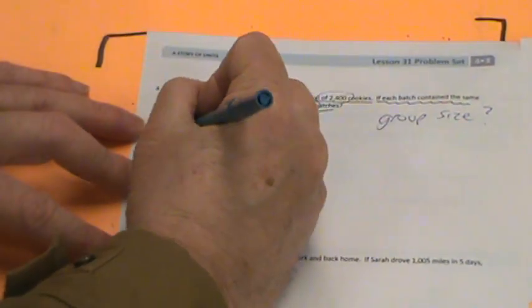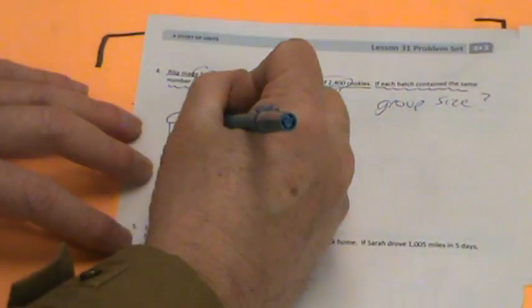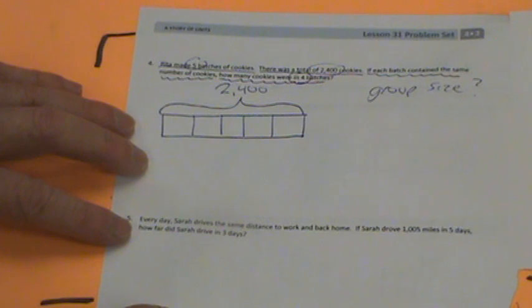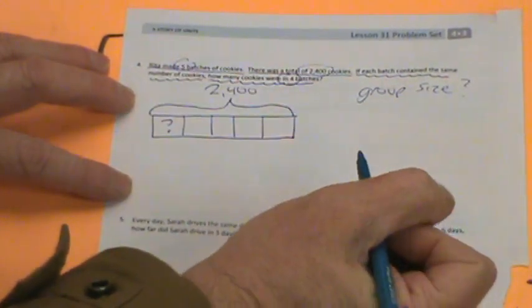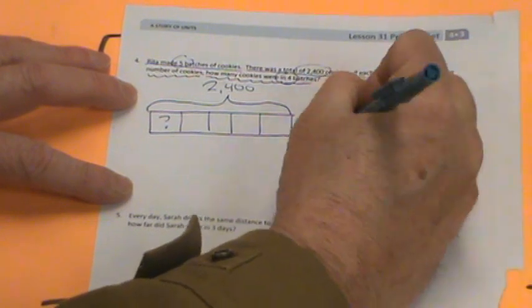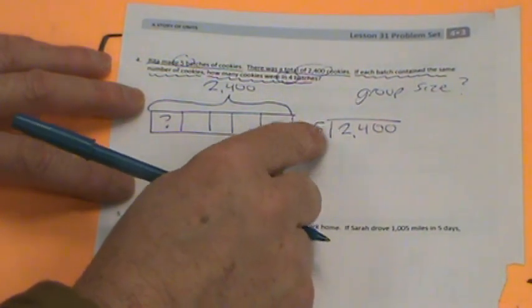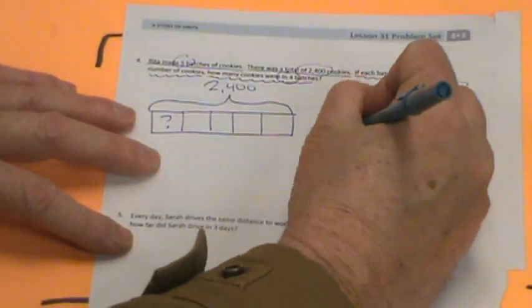Let's make a tape diagram. Our whole is 2,400. We're putting them into five batches. 1, 2, 3, 4, and 5. We're going to take 2,400 and divide it by five. We can't divide two by five. So I'm going to put the X there. Five into 24. 5, 10, 15, 20 is four. So five times four is 20.